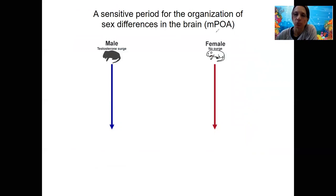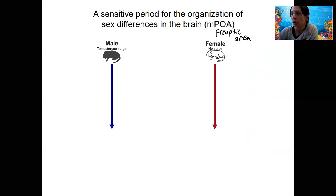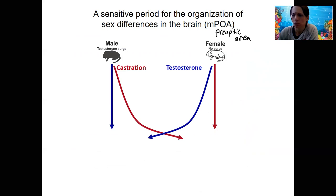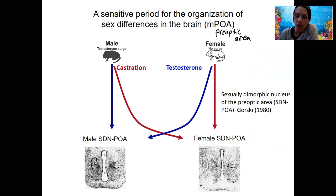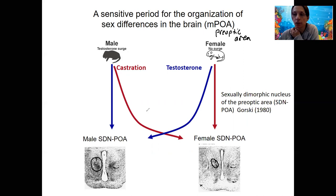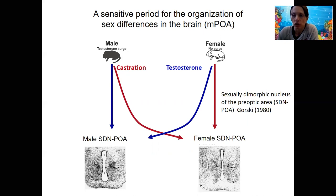An example of organization: this is a part of the brain called the preoptic area, in the hypothalamus. Males have a surge in testosterone early in life; females don't. That results in permanent changes in the organization of the brain. One example is the preoptic area — males have a larger preoptic area than females. You can alter this sex difference by altering hormones in development — by castrating males or giving testosterone to females early in life, you can change how this brain region is set up.